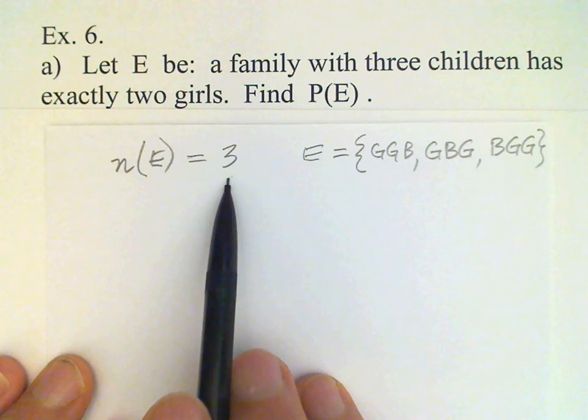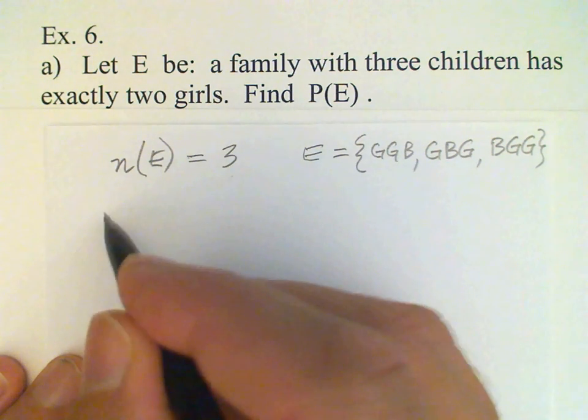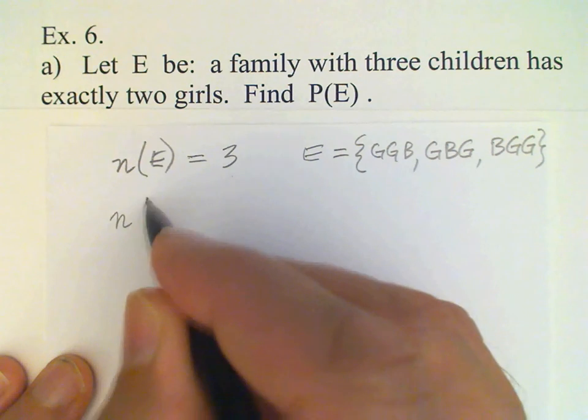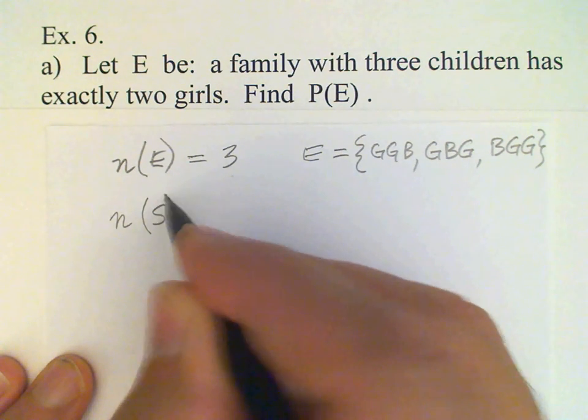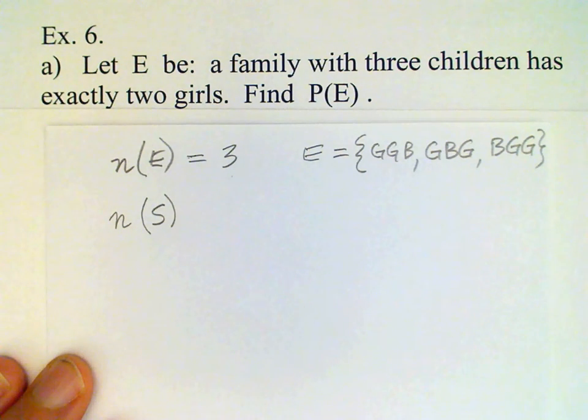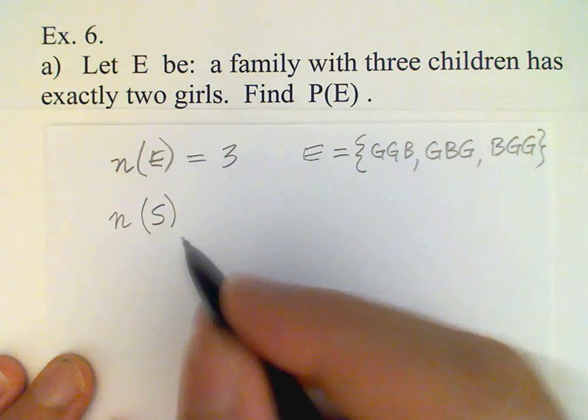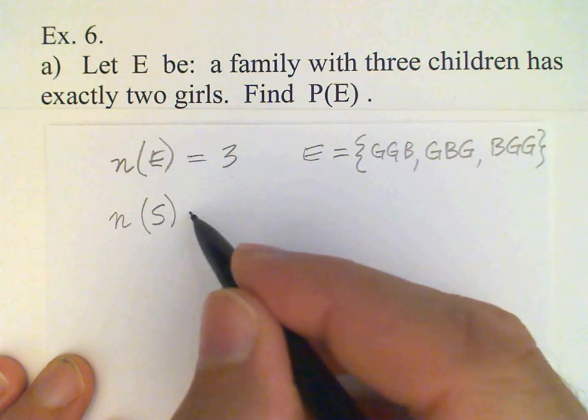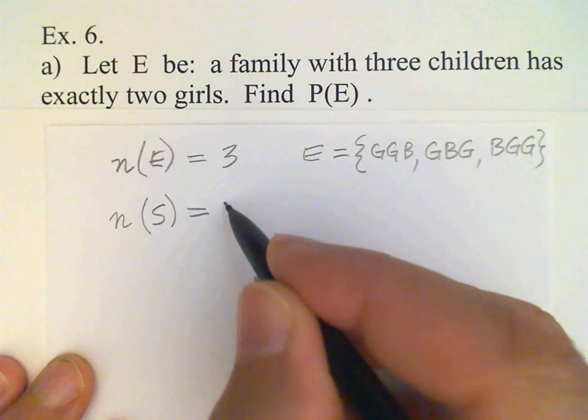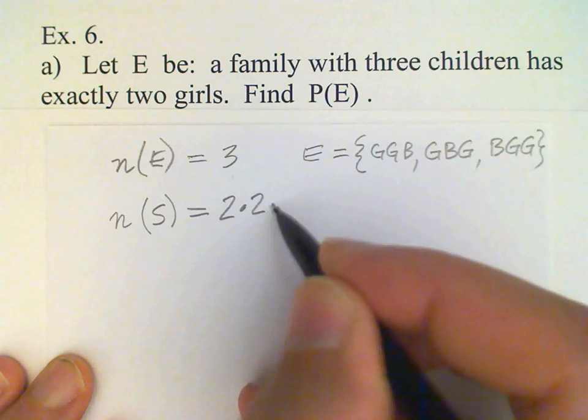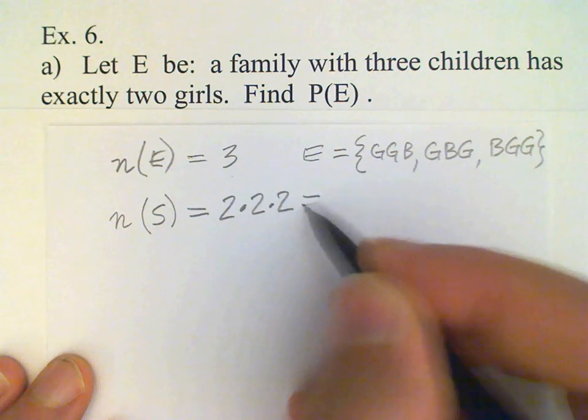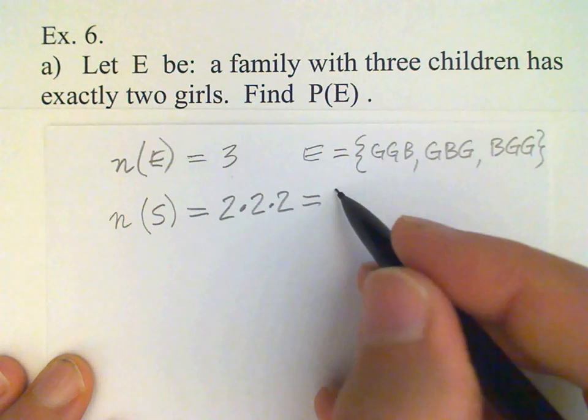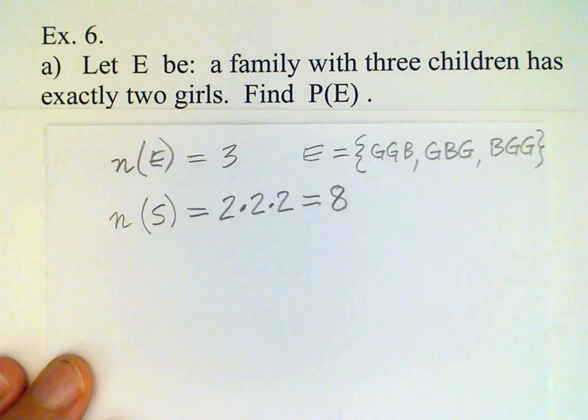How many outcomes are in the sample space? Well, again, for any sample space where there are two possibilities at each stage, we just multiply those numbers together and we get the total. In this case, three different stages, and so the total number is eight in the sample space.